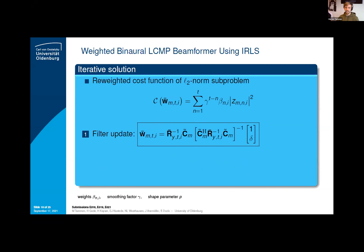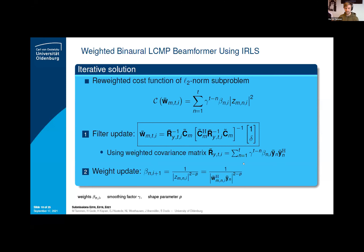The solution to this filter contains the relative transfer functions of the target and the interferer, c-tilde, and the constraints 1 and delta, and the re-weighted covariance matrix R-bar, which itself contains the weights beta in its definition. The weights beta are then updated in each iteration using the filter output. The shape parameter is also contained in the update formula. The new weights are used in the next iteration to update the filter again. This procedure is executed until convergence.